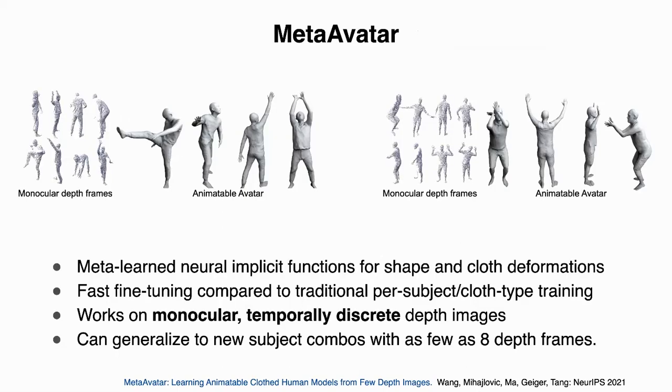In this work, we propose MetaAvatar to learn clothed human body models from very sparse monocular depth frames. Following ScanAnimate, we use neural implicit functions to represent the clothed body surface. It basically uses a continuous function to represent the 3D surface, and this continuous function is represented by a neural network.